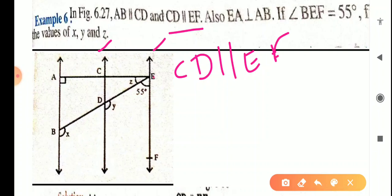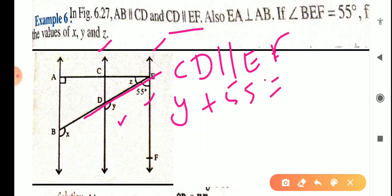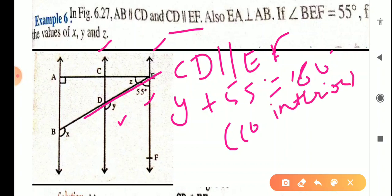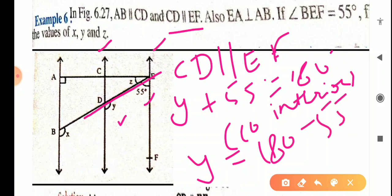When AB, CD and EF are all parallel and ED is the transversal, Y and 55° are co-interior angles. So Y plus 55 degrees equals 180 degrees. Therefore the value of Y equals 180 minus 55, which is 125 degrees.